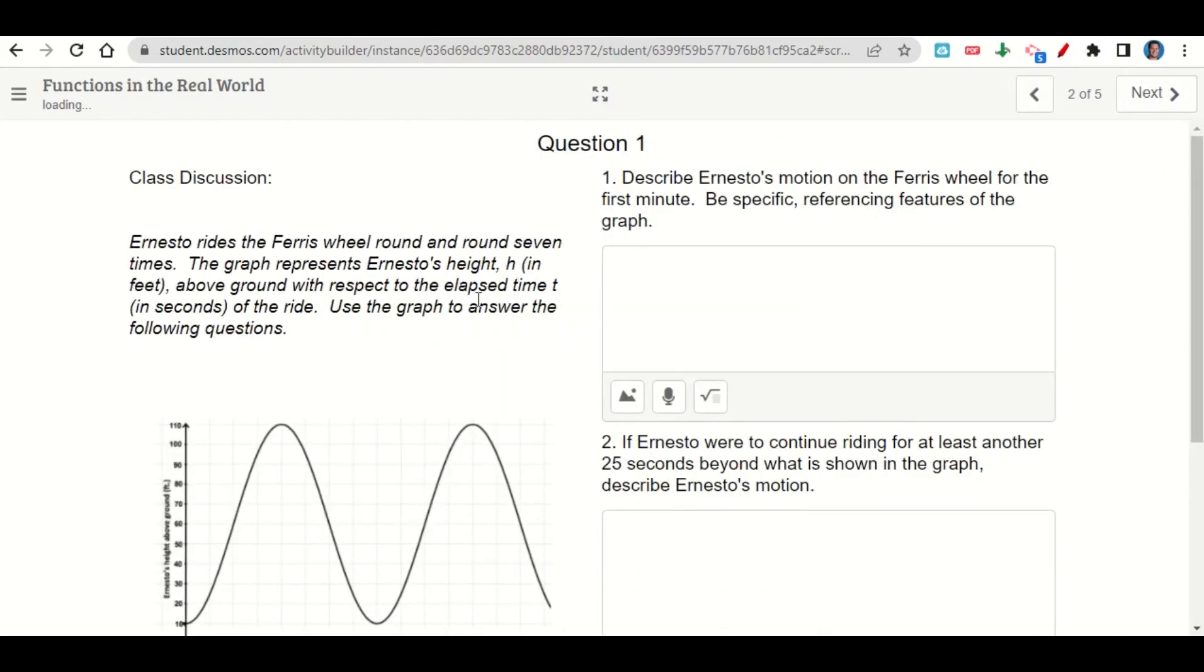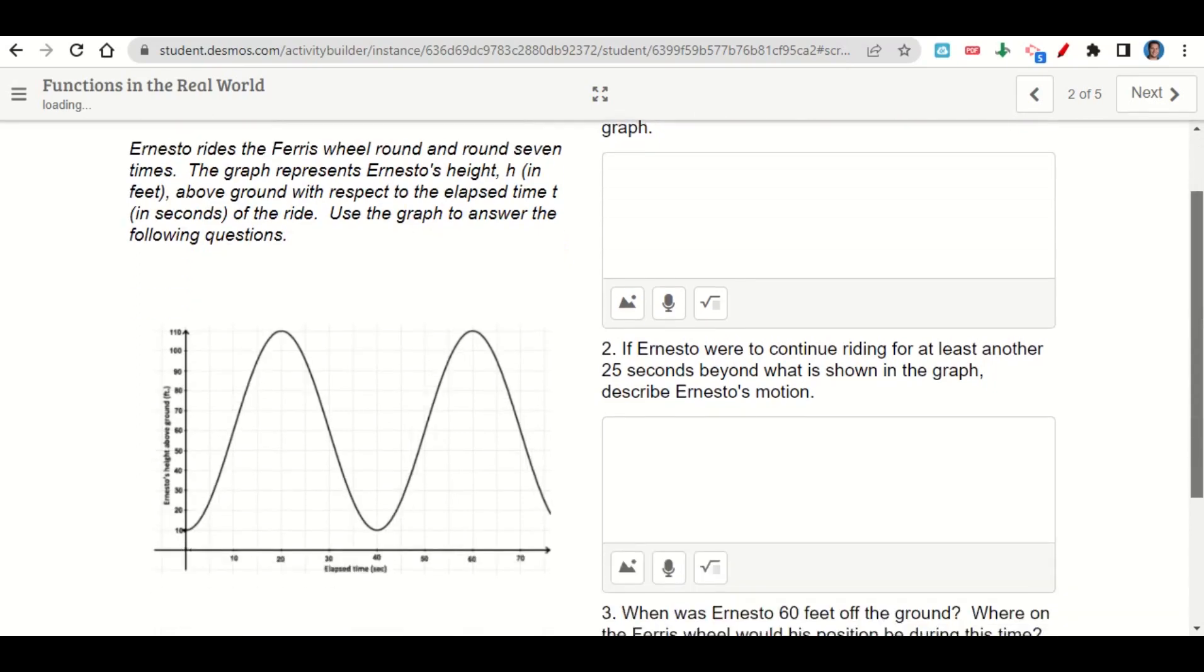Now on this one, it says Ernesto rides the Ferris wheel round and round seven times. The graph represents Ernesto's height, H, in feet above the ground with respect to the elapsed time, T, in seconds. Use the graph to answer the following questions. It says, describe Ernesto's motion on the Ferris wheel for the first minute. This is seconds, so 60 seconds is a minute. He goes from bottom to top, back down, and then peaks again at 60 seconds. So you'll just put that into words.